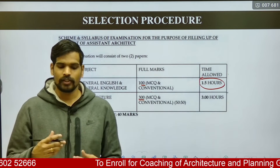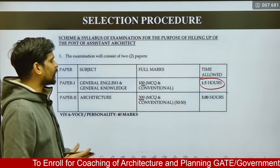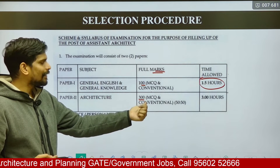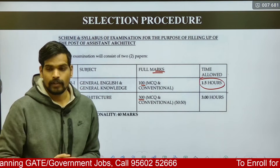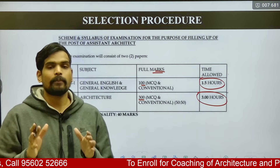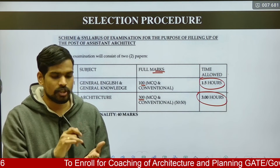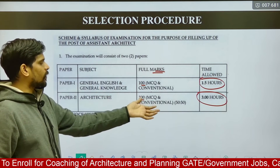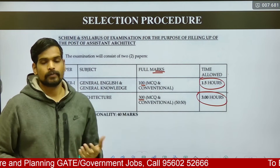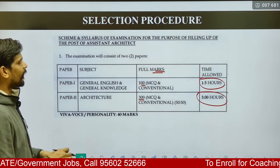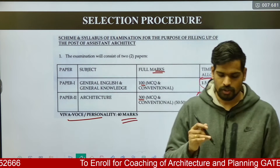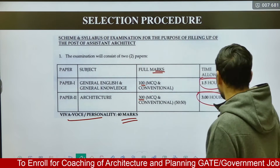The architecture paper will have a total of 300 marks, with both MCQ and conventional questions in a 50:50 ratio, over a 3-hour examination. In total, both papers span 4.5 hours. The marks breakdown is: 100 marks for English and General Knowledge, 300 marks for architecture, and additionally 40 marks for the interview and personality round.